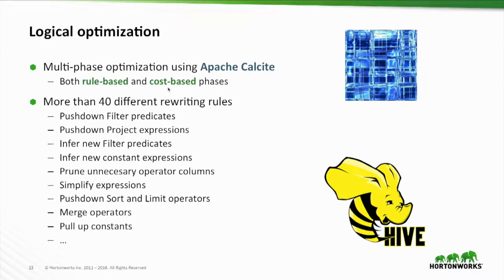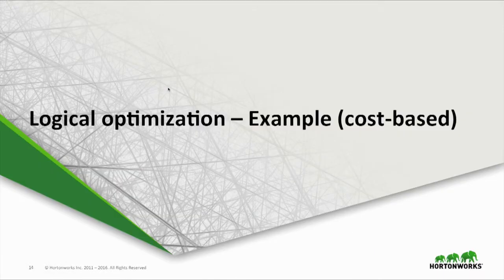Many of those rules exist as-is in Calcite, but many we have written ourselves for more highly specific cases. These rules are both rule-based and cost-based. Rule-based means that if you can fire the rule and do the transformation, it will always be better. Cost-based means you have to assess the tree before and after transformation and only proceed if the transformed version is better. I'm going to walk through examples of both types.